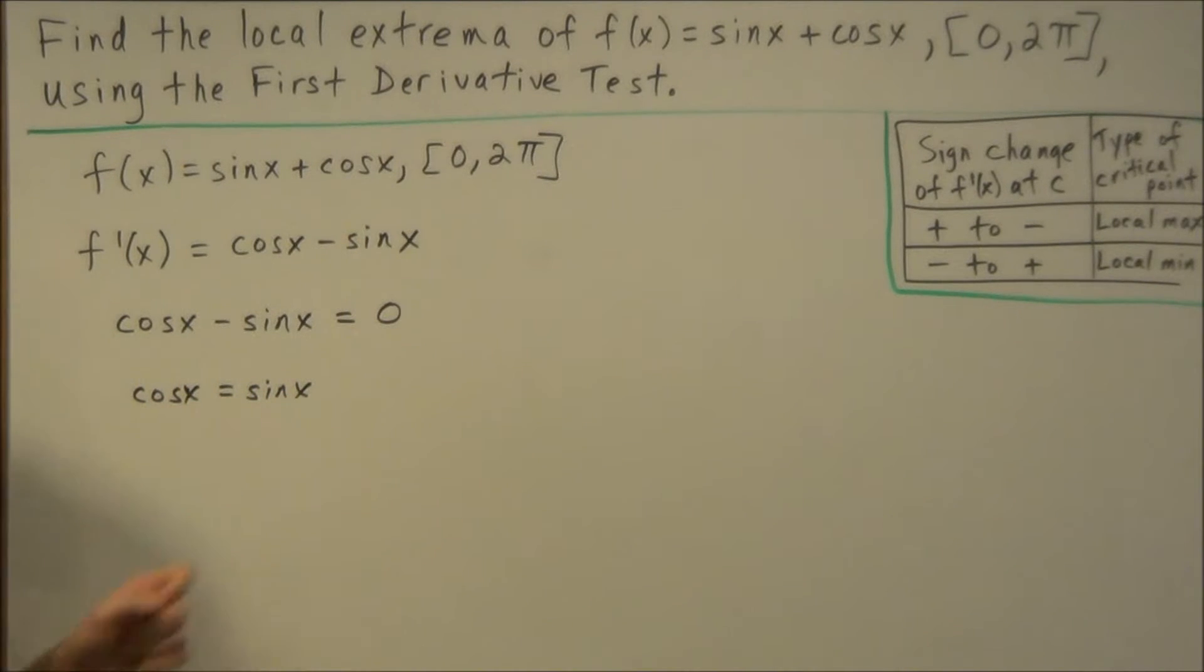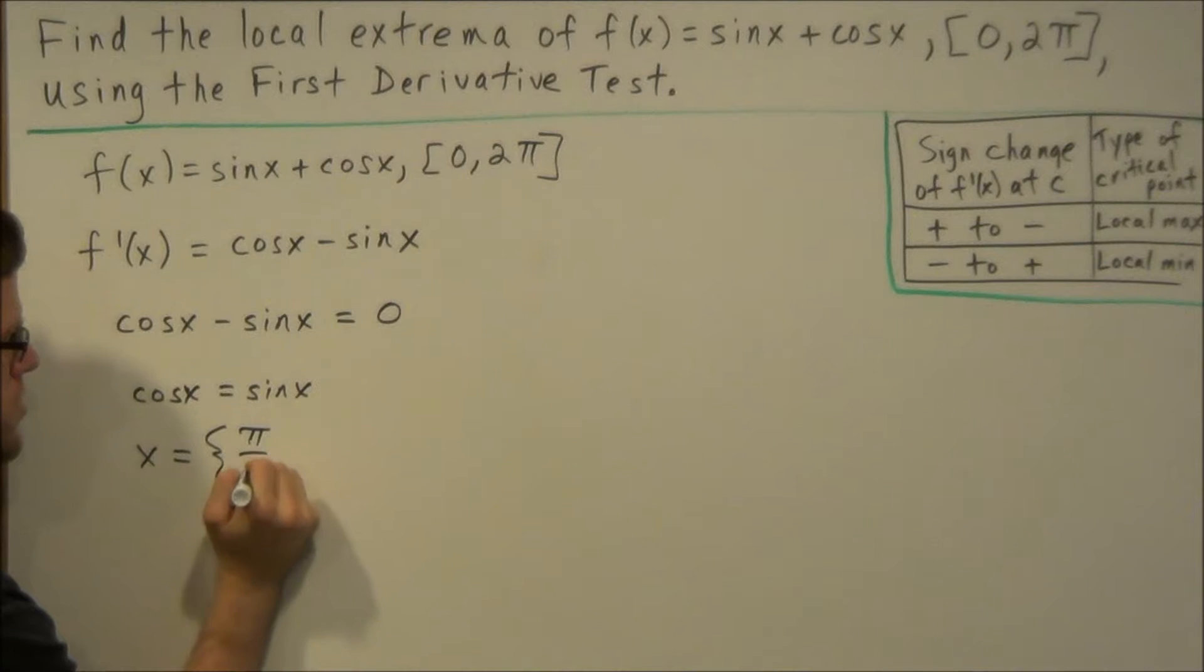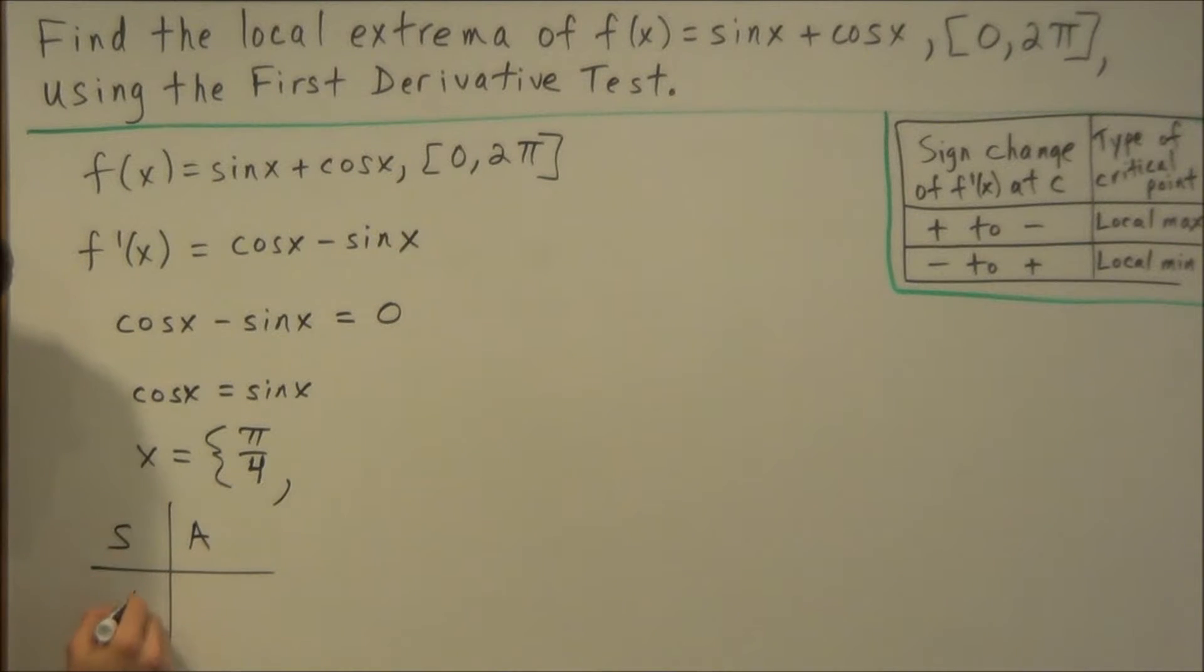And if we think at this step, cosine x equals sine x when x equals 45 degrees. But since we're in radian mode, we're going to just say for our first solution, π/4. But we also have to think about ASTC. This is a quadrant 1 solution. And where else are sine and cosine equal?